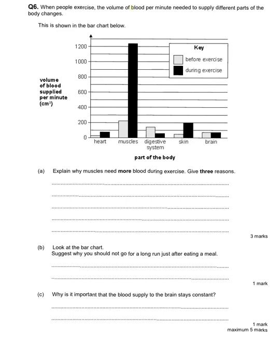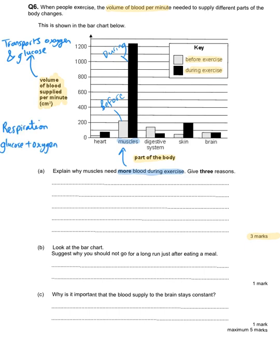This final question is looking at how the volume of blood per minute needed to supply different parts of the body changes when people exercise. We've got the different parts of the body on the x-axis and the volume of blood per minute on the y-axis. There is the black bar that is the amount of blood needed during exercise, whereas the grey bar is the volume of blood per minute needed before exercise is happening. This question says explain why muscles need more blood during exercise, give three reasons. Remember, the blood is what transports the oxygen and the glucose to our cells. During respiration, energy is released because of the oxygen reacting with that glucose. The energy is released from the glucose.